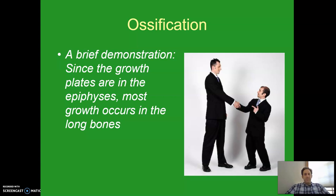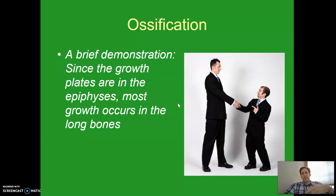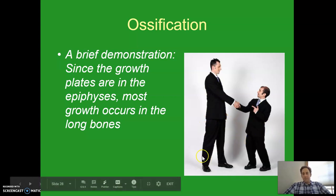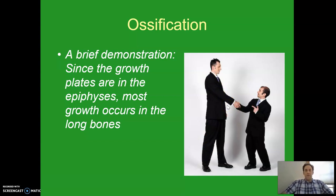Since the growth plates are in the epiphyses, most of the growth actually occurs in the long bones. If you get a tall person and a short person side by side and line their hips up — having the tall person squat so their hips are level with the short person — you find that the torsos are actually pretty close to the same height. What really gives tall people their height is that their legs and arms are really long. So the growth is happening in those long bones where those epiphyseal plates are — that's where the majority of growth happens.